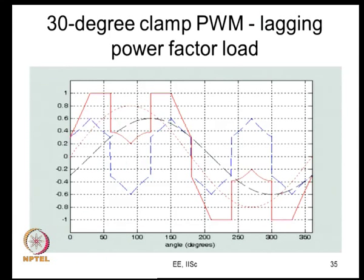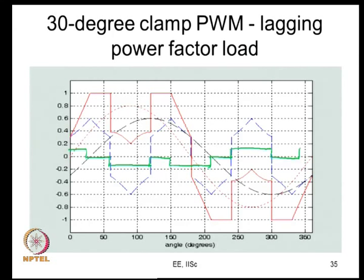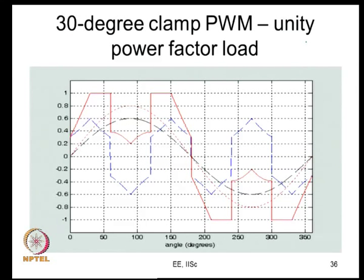For 30-degree clamp PWM at 30-degree lagging power factor: the current direction determines sign at each region, clamped regions give zero error, and the resulting waveform differs yet again. You can do this exercise for any given bus clamping PWM at any power factor. The value Verror = Vdc × Td / (2Ts) does not change, but the waveform changes significantly with both method and power factor.